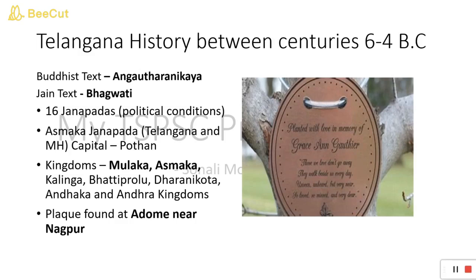There is also a Jain religious text that references this region. When talking about Jain religion, we should know that its founder was Rishabhanatha — please remember the name Rishabhanatha. According to this text, Rishabhanatha's younger son Bahubali inherited the Asmaka Janapada and ruled with Potan or Paudanyapur as its capital, which is today's Bodhan.